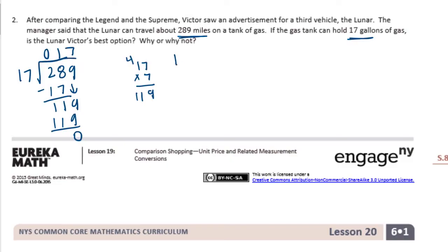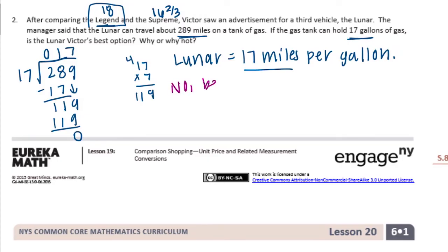That means that the Lunar gets 17 miles per gallon. We remember the Legend got 18 miles per gallon and the Supreme got 16 and two-thirds. And we said that the Legend was the best deal at 18 miles per gallon. The Lunar gets 17 miles per gallon. So we want to know, is the Lunar Victor's best option? So I'm going to say it is not. No, because...